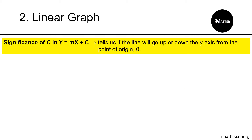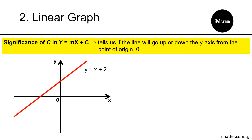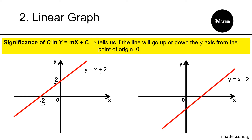I would like to emphasize the significance of the constant c in y equals mx plus c. This tells us if the line will go up or down the y-axis from the point of origin. For example, when the constant is positive 2, the graph shifts up — the y-intercept is 2 and the x-intercept is negative 2. When the constant is negative 2, the line goes down the y-axis, giving a y-intercept of negative 2 and an x-intercept of positive 2.